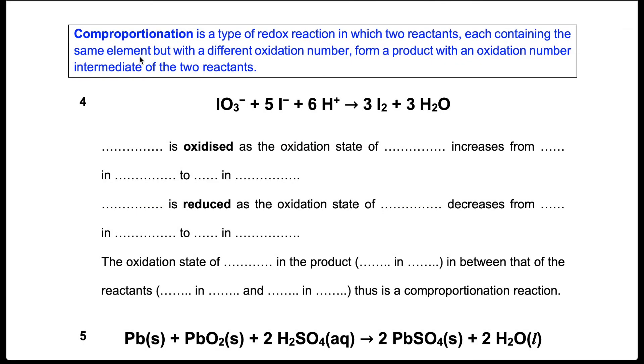Another unique type of redox reactions is known as comproportionation. In such a reaction, we have two reactants, both containing the same element, but they have a different oxidation number. And then they form the same product with the oxidation number that is in between that of the two reactants. I think it's easier to illustrate this idea using an example. So we look at example number 4.